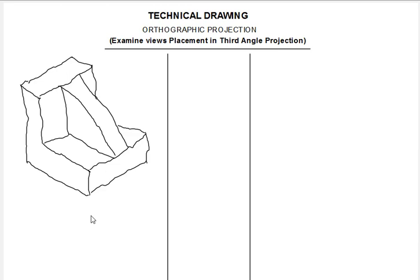Just as we learned in our previous lesson, there are two cases when it comes to views placements in first angle projection — we studied case one and case two, and we learned how to draw the views correctly. In this very lesson, the third angle projection also has two cases. We are going to study both cases and look at how the views will be drawn.